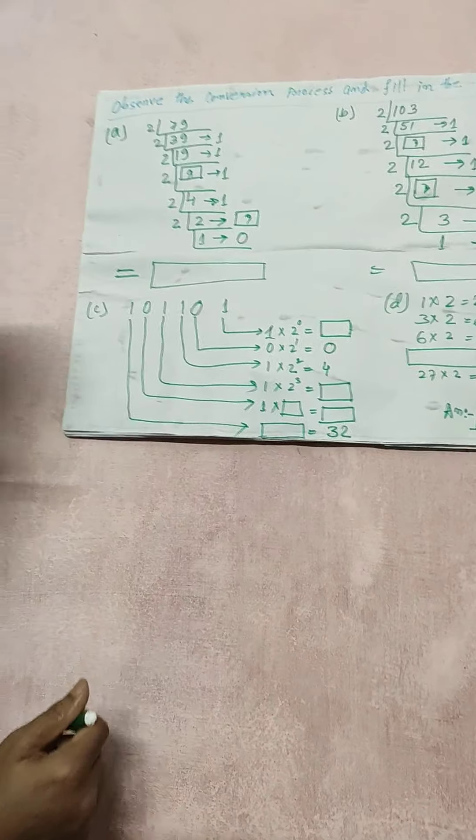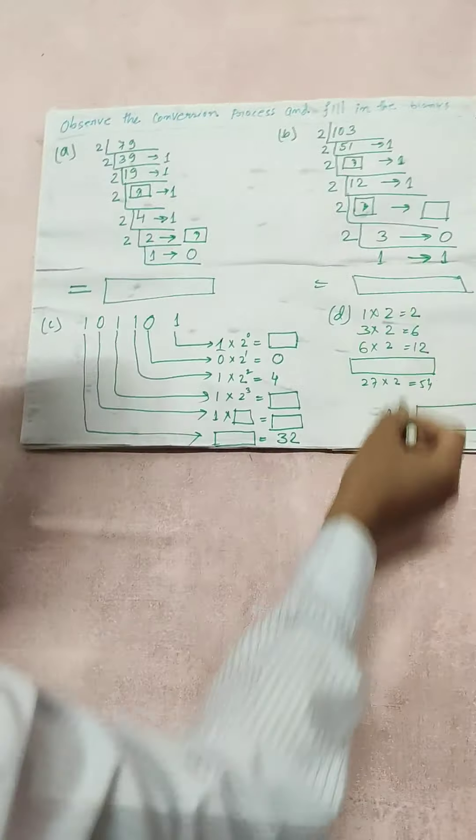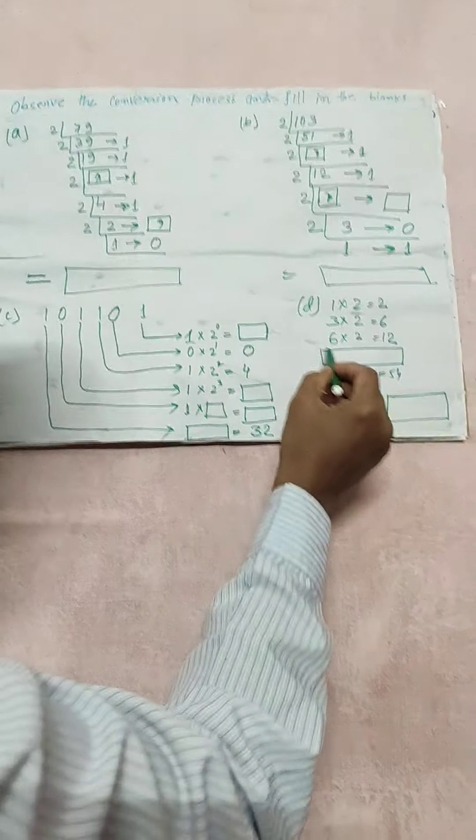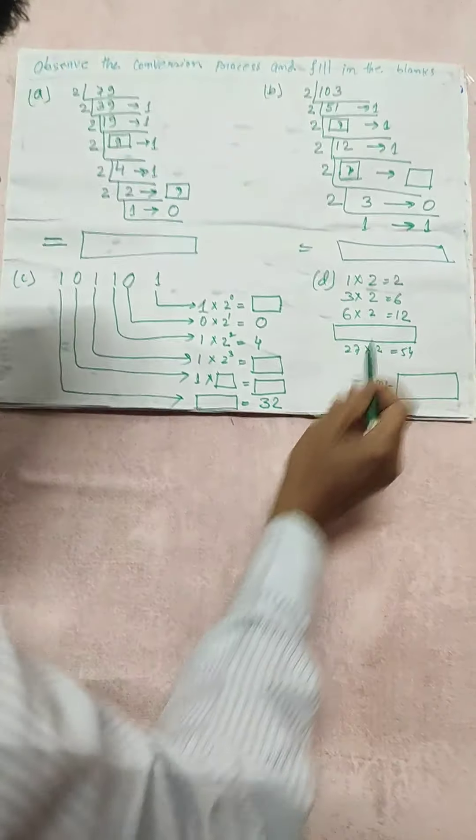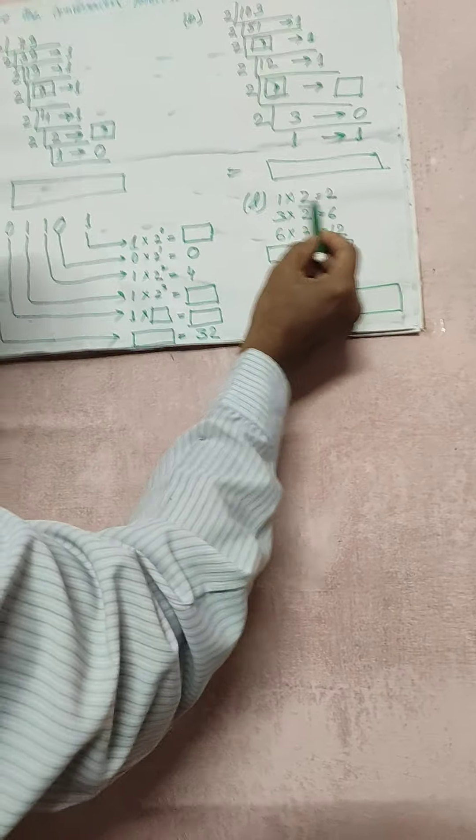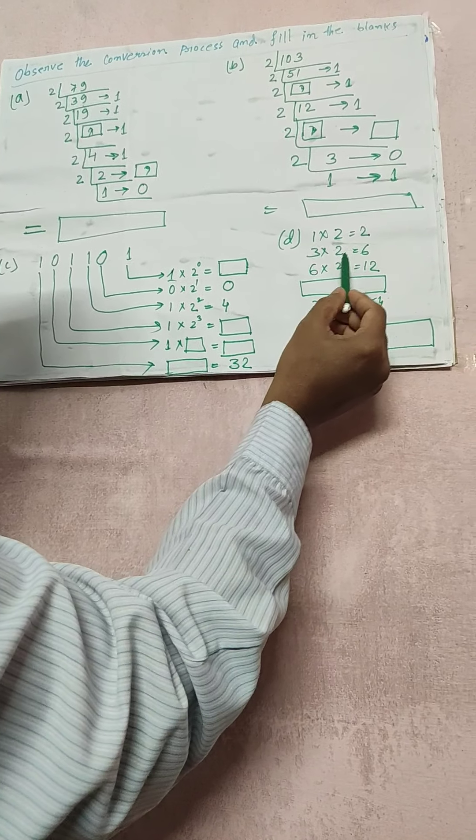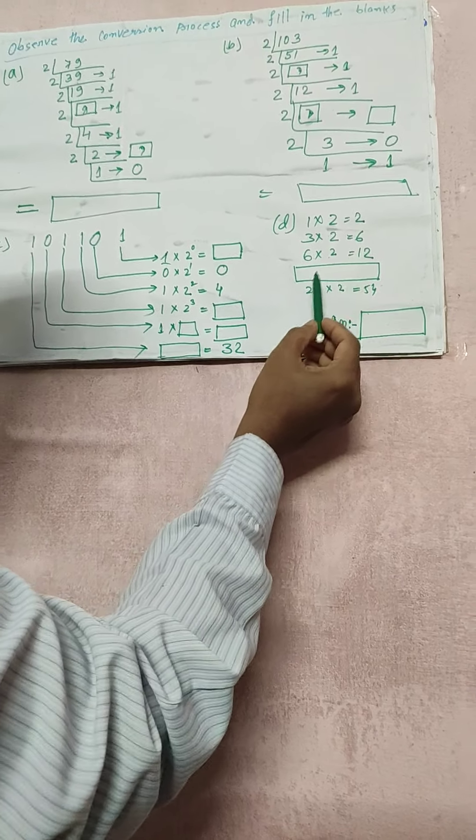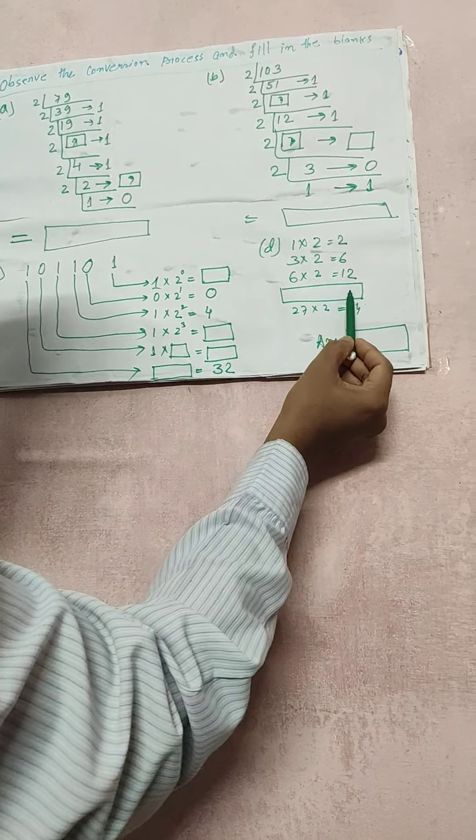Number D now. There is a pattern in between the fill in the blanks. It is very interesting. You need to solve that. 1 into 2 equals 2, 3 into 2 equals 6, 6 into 2 equals 12. Now what will be the number and answer over here?